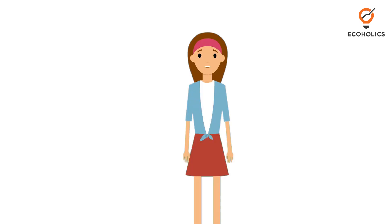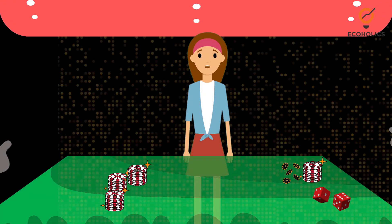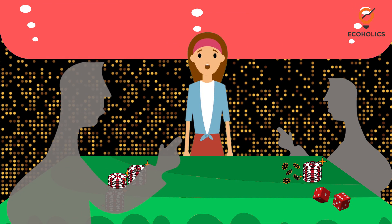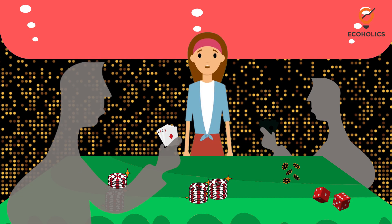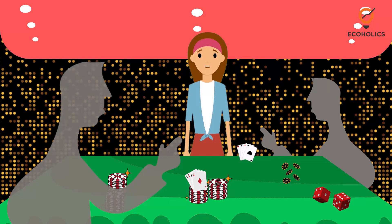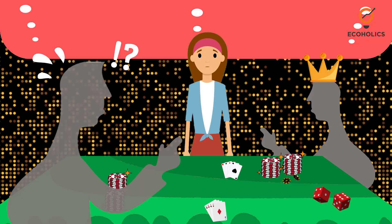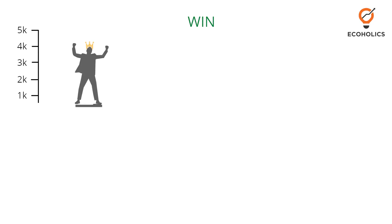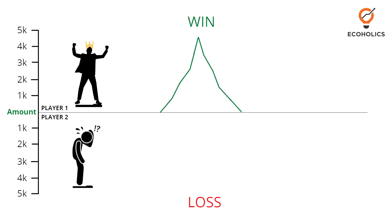Let's take an example of a poker game. At the beginning of a poker game, the pot determines the initial amount of money for which everyone is playing. Now, as the game progresses, some players win money while other players lose money. Therefore, the combined sum amount of wins is equal to the combined sum amount of losses.